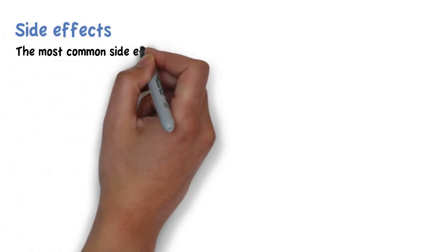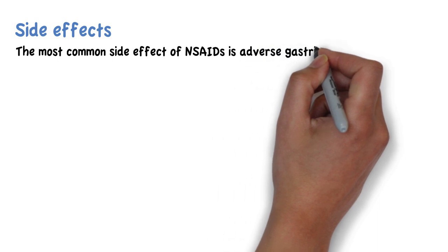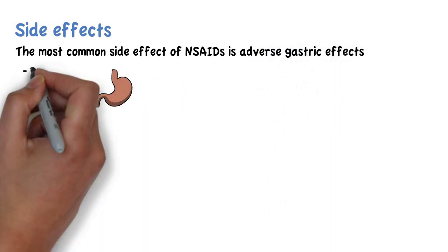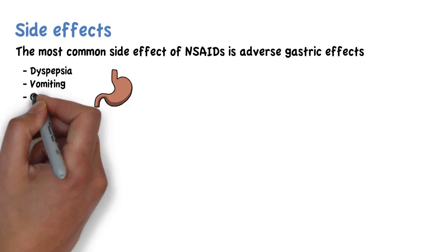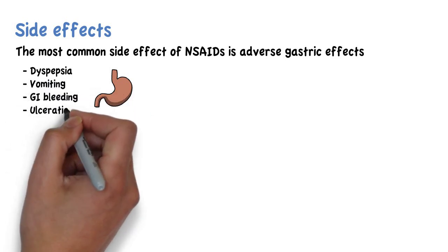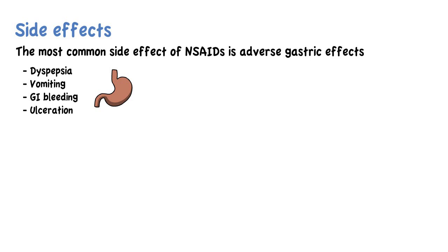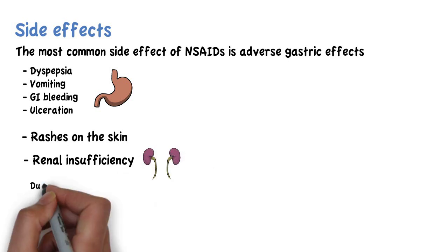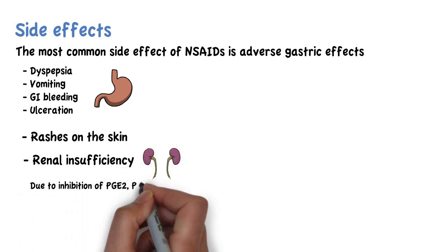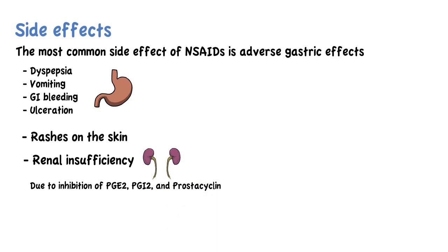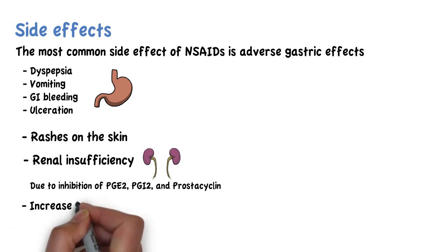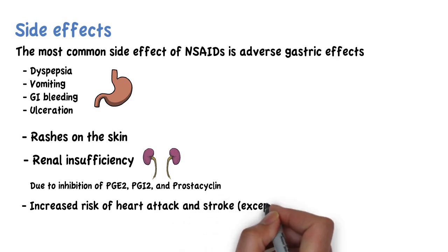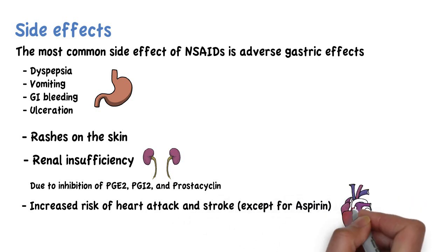The most common side effect of NSAIDs is adverse gastric effects, with symptoms such as dyspepsia, vomiting and even at times gastrointestinal bleeding and ulceration. Other side effects include rashes of the skin, renal insufficiency — which is due to the inhibition of prostaglandin E2, prostaglandin I2, and prostacyclin, which are involved in the regulation of renal blood flow — and, with the exception of aspirin, NSAIDs increase the risk of heart attack and stroke due to their tendency to increase blood pressure.